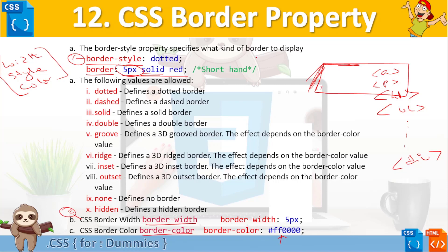Border-style can be set to dotted, which creates a dotted border around the component. There are also various other styles: dashed, solid, double, groove, ridge, inset, and outset. As their names suggest — dotted creates a dotted border, dashed creates a dashed border, solid creates a continuous solid border, and double creates a double-line border.